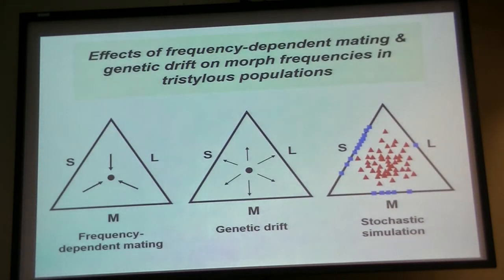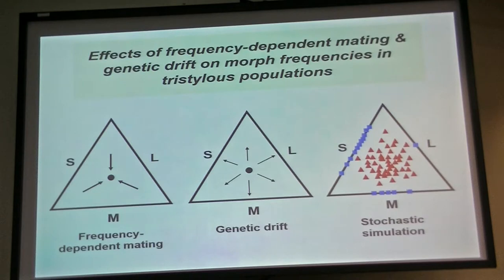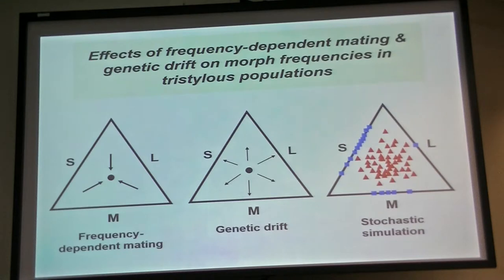I want to show you this cartoon and simulation, because it's important for understanding the mechanism that drives this system to selfing — work done by Brian Husband many years ago. The idea is that with tristyly, you basically have a polymorphism maintained by negative frequency-dependent selection, which drives the mating morphs to an equilibrium of one-to-one-to-one. In fact, Ronald Fisher worked on this problem and provided the first theoretical solution of the isoplethy equilibrium for a tristylous species, and he actually did empirical work on Lythrum.